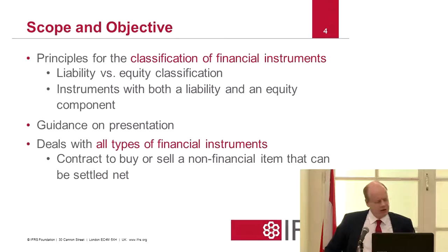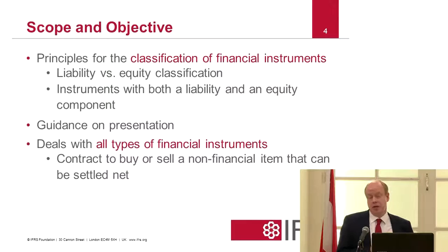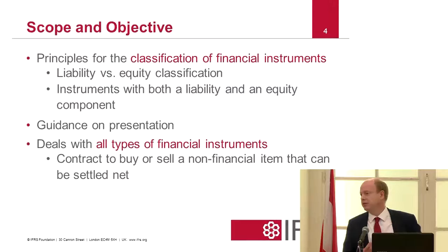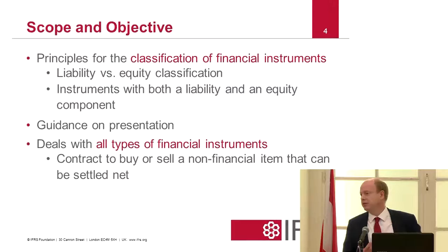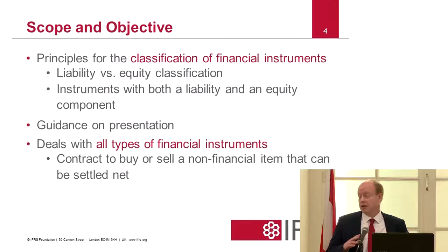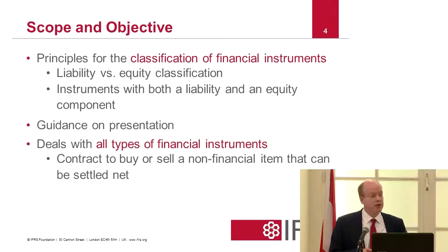IAS 32 is particularly concerned with how you distinguish between liability and equity. Having spent 12 years in investment banking, it is definitely true that in the area of structuring particular instruments as to whether they could be liabilities or equities, structures could usually find fancy ways to get either answer. Because it's a very complex area, you could introduce certain features and often get whatever it is your client was really wanting. So there are a lot of implementation issues in this area of classification.